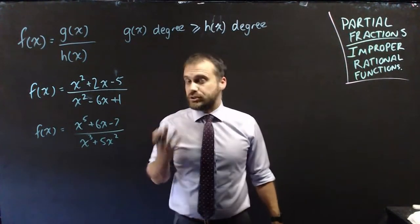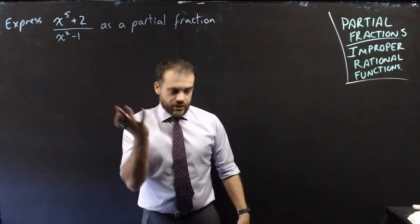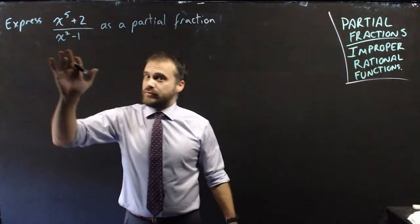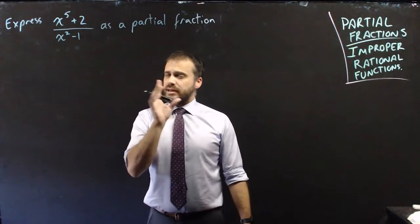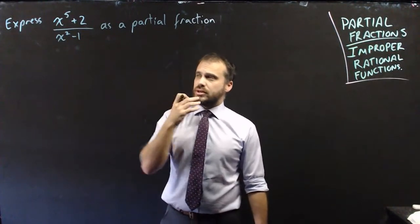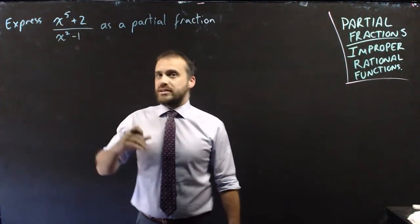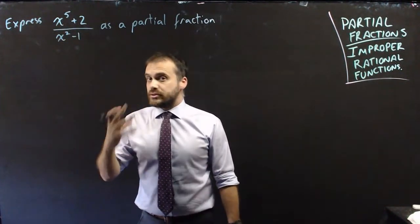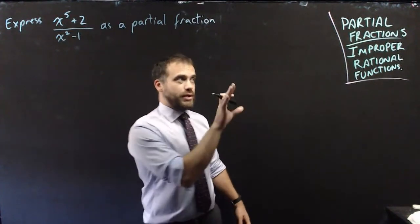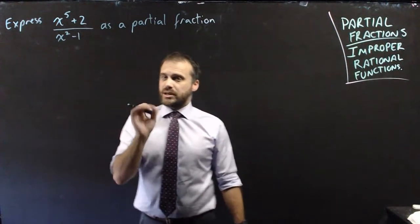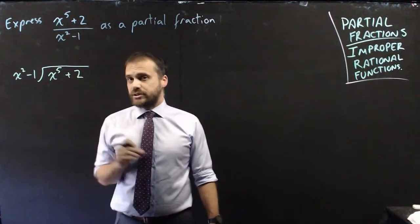Now we know what an improper rational function is — what are we doing here with partial fractions? Let's look at an example: x to the 5 plus 2 over x squared minus 1. We're going to express it as a partial fraction. This is this function divided by this function, and what we can now do is something called polynomial division. We didn't need to do that for proper rational functions, but we have to do it for improper ones.